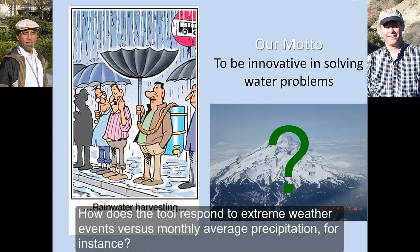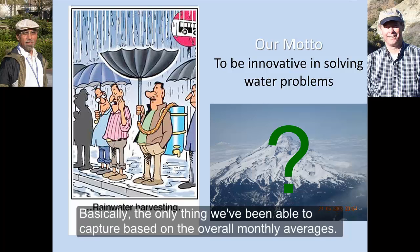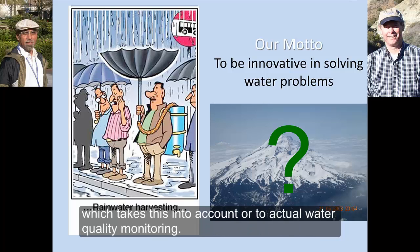How well does the tool respond to extreme weather events versus monthly average precipitation? We have not incorporated any extreme events into this. It's based on overall monthly averages, and that's it. If you have an extreme event, I think you would need to run a more sophisticated model that takes events into account, or do actual water quality monitoring.